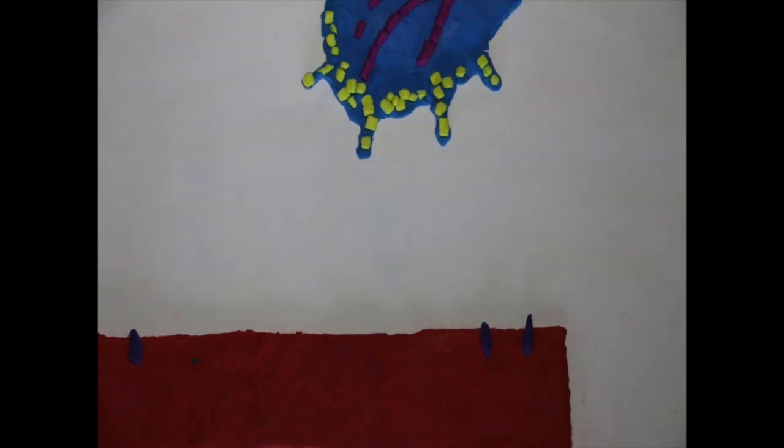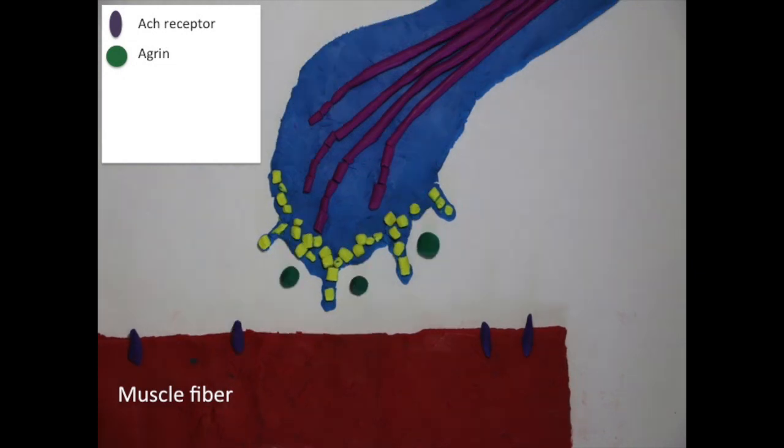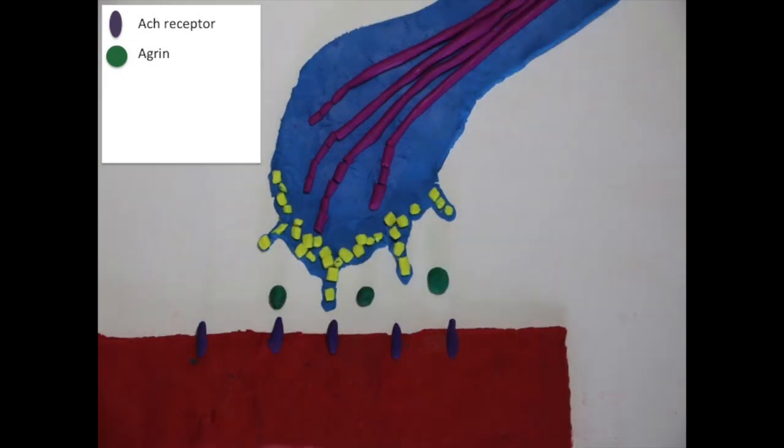As the growth cone approaches the muscle fiber, agrin, shown in green, is released to cause acetylcholine receptors in the muscle to cluster beneath the axon.